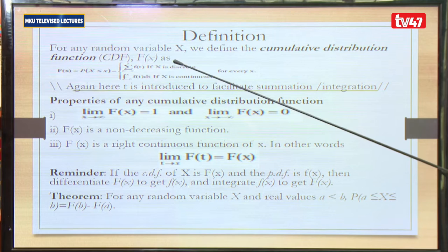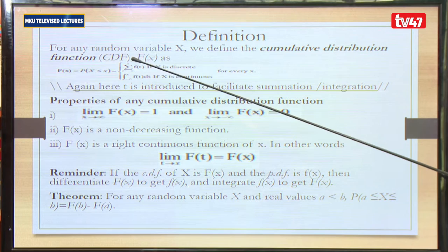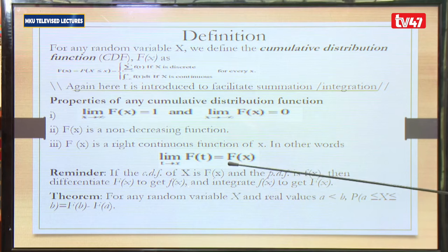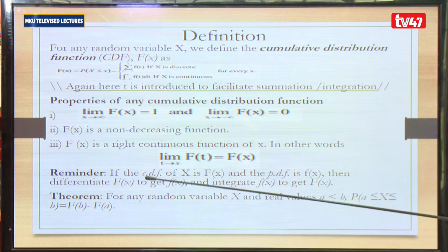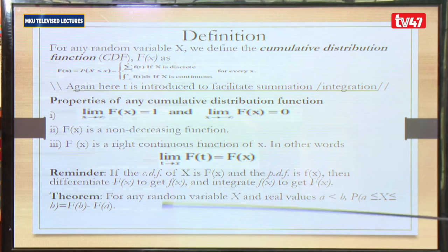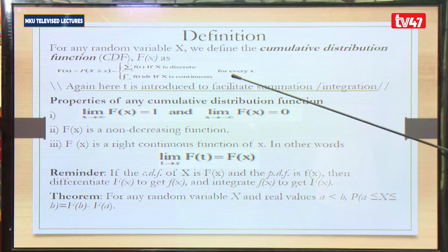Note that we are summing from the smallest value of X — that is, from negative infinity — up to some point X. Cumulative means it is a stepwise function increasing from the smallest value of X, such that at the highest point of X you get 1. That is why we call it a cumulative distribution function — it cumulatively sums the probabilities from the PDF.